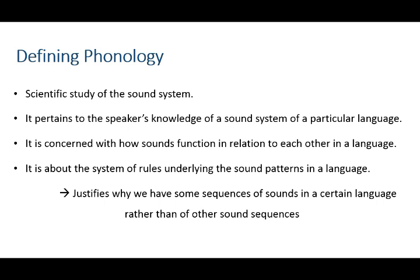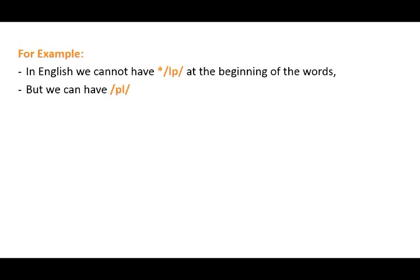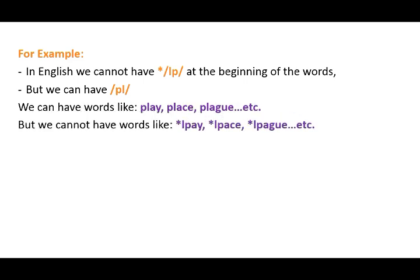This justifies why we have certain sequences or clusters of sounds in certain languages instead of others. For example, in English we cannot have certain clusters at the beginning of words, but we can find words that begin with the cluster P-L. Therefore we can have words like play, place, plague, etc., but we cannot have words like LP, etc. There are certain rules that govern the combination of sounds in English, as well as other sound systems, and that's something we will be showing in due course.